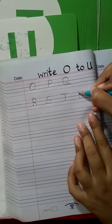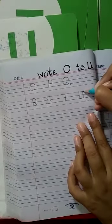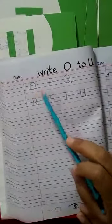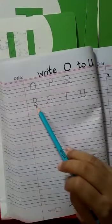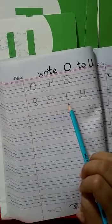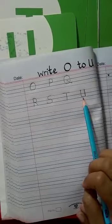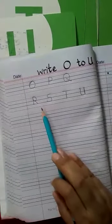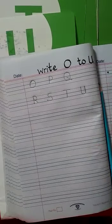Did you see? First we drew a straight line, then curved it, then added another straight line — and that made U. Now let's revise all together: O, P, Q, R, S, T, U. You have to practice with your mom at home, and I will check who has been practicing. I hope you all revised well with me. Do practice at your homes. Stay home, stay safe. Allah Hafiz.